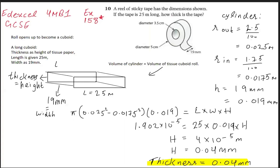Here is an interesting question from Edexcel GCSE 4MB1 syllabus, exercise 158, star question 10. You can see a tissue roll which is 25 meters long. The length of the tissue paper is 25 meters long.